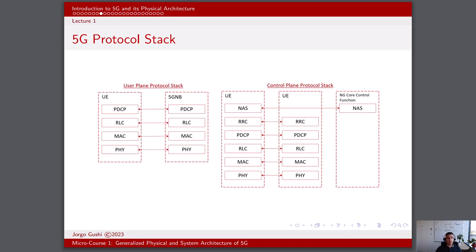The user plane protocol stack is responsible for handling user data and facilitating data transmission between user equipment, or UE, and the core network or other UEs. It focuses on the efficient and reliable transfer of user-generated information, such as voice, video, internet data, and other application data.